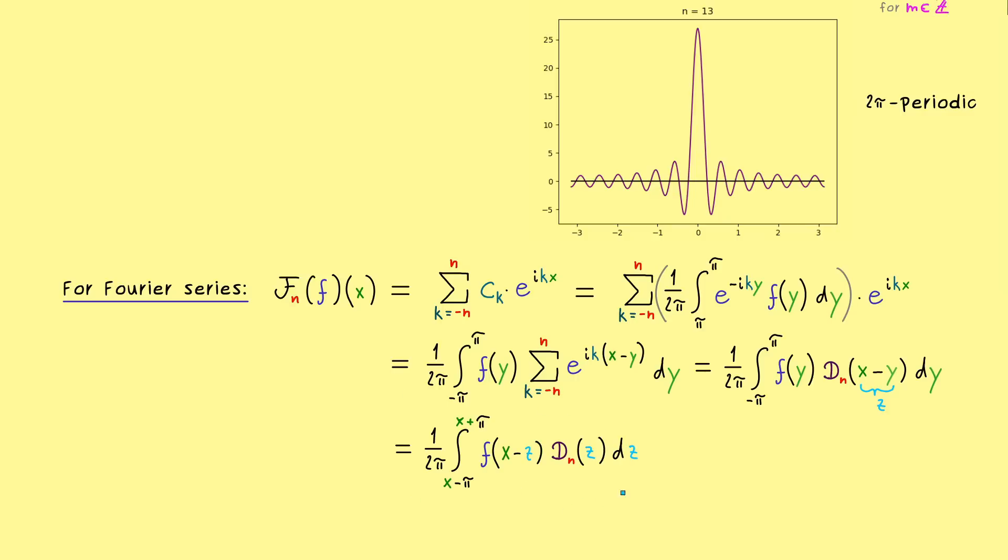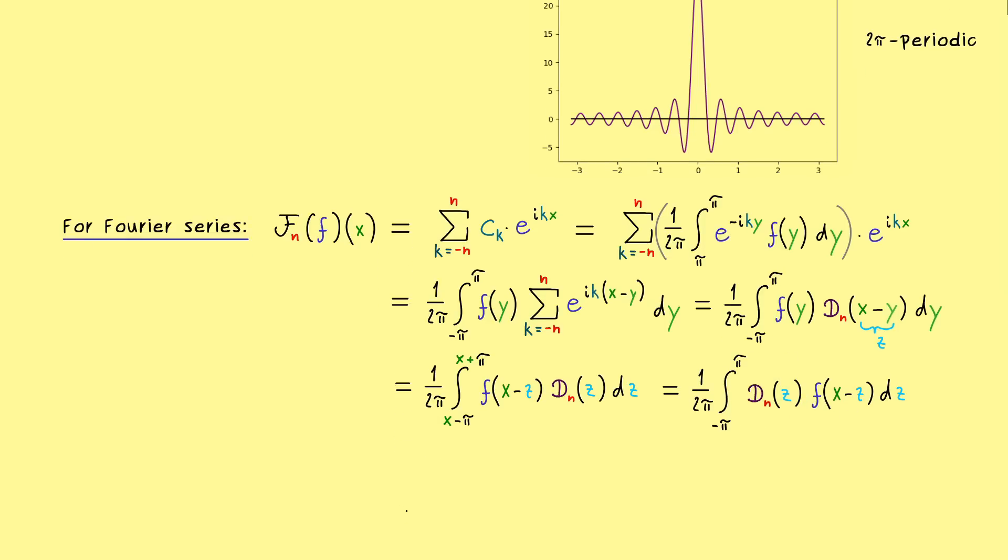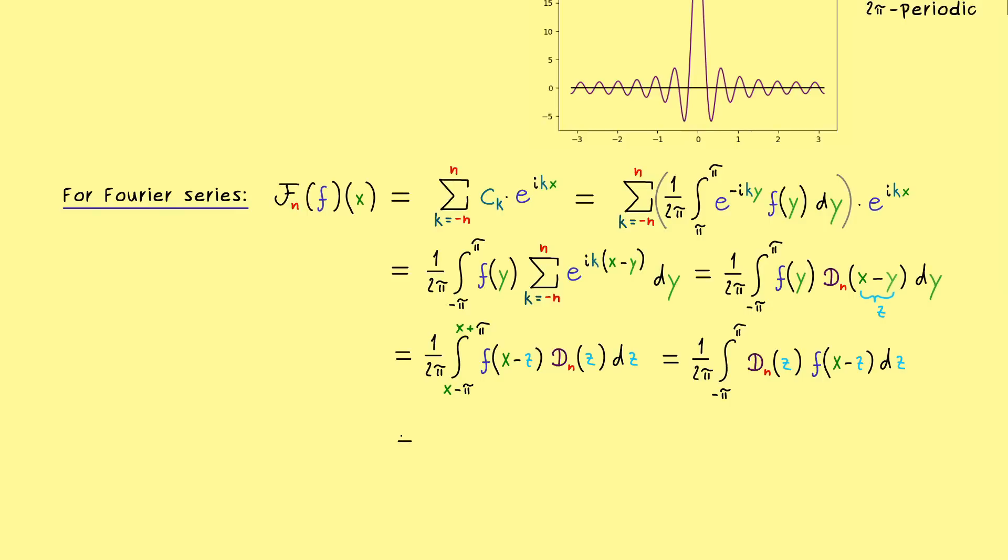However, then instead of y, we have x minus z inside of f, and on the other side we just have D_n of z. So this was the whole substitution, and as already mentioned, we can also go back to the integral from minus π to π. And there you eventually see that we just have flipped the variable names between the two functions. And indeed, if we want, we can also change the order and write D_n(z) times f of (x minus z). And there we see that we can also equivalently write the whole thing as an inner product.